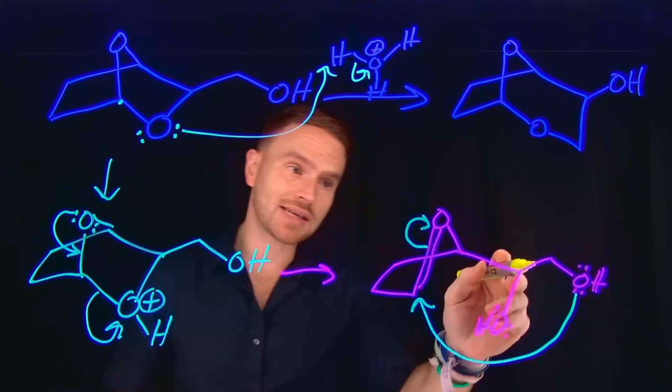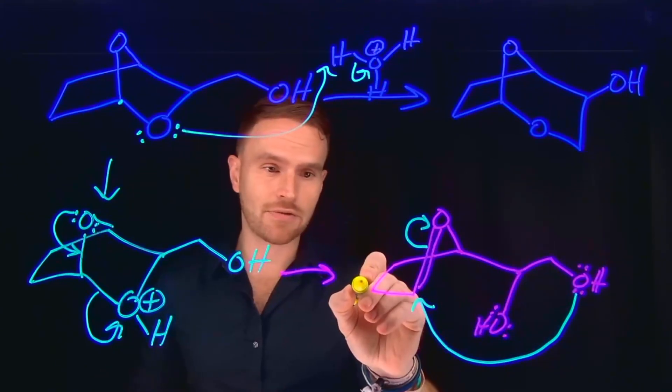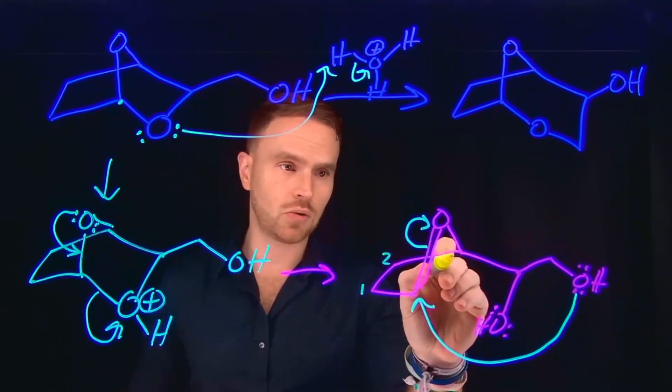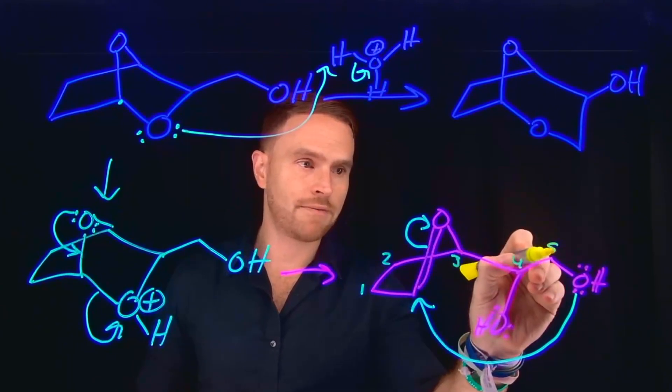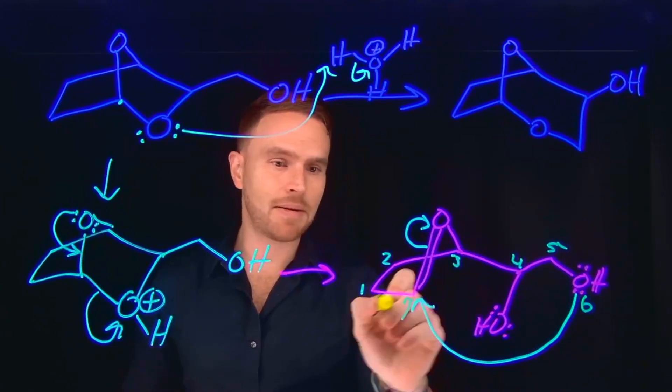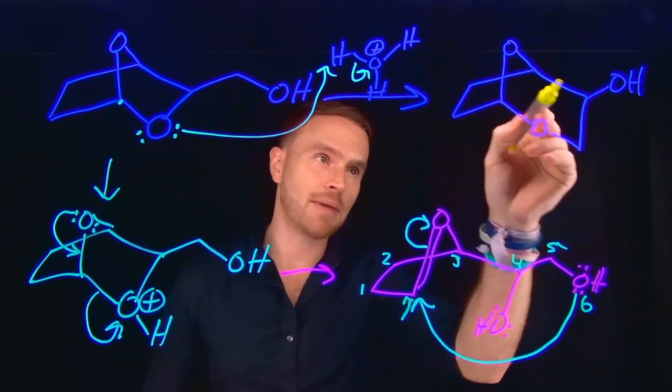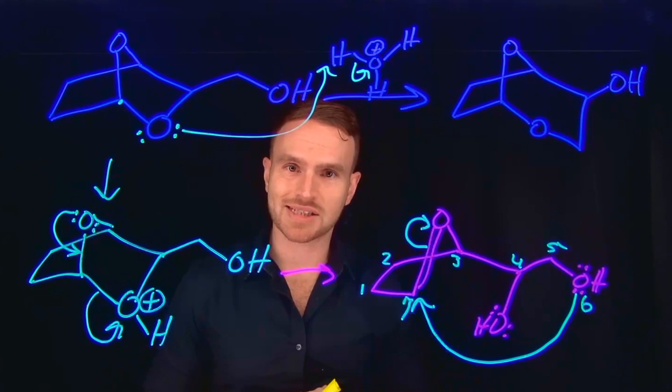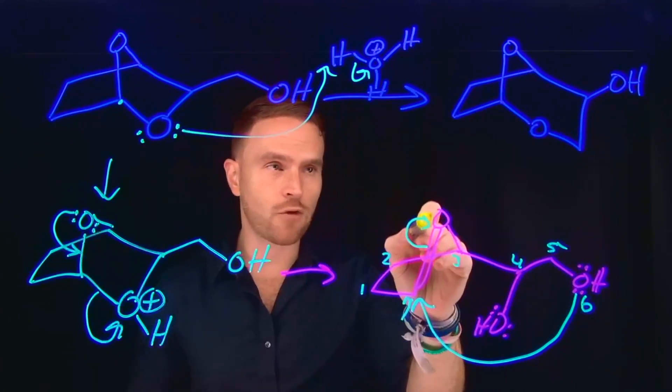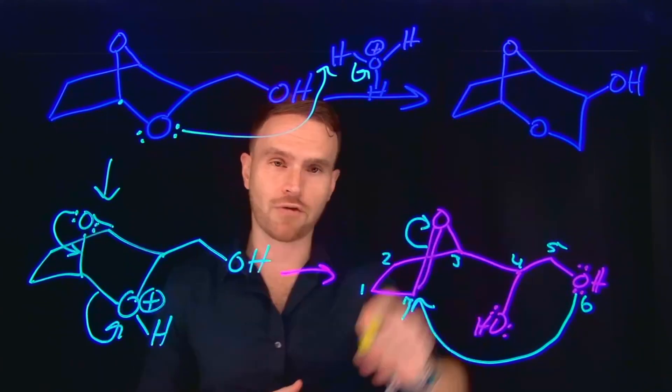And notice that this is now going to end up making a seven-membered ring. So we have one, two, three, four, five, six, and then seven members of that ring, which is actually how we get our seven-membered ring as part of this fused ring system. And we're also reforming the bridged portion of our product.